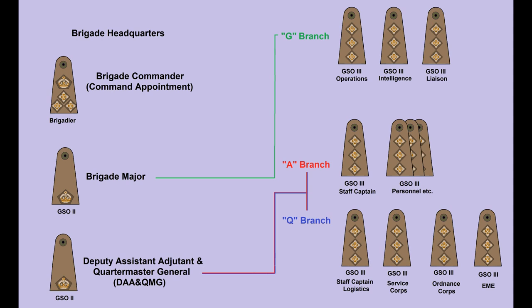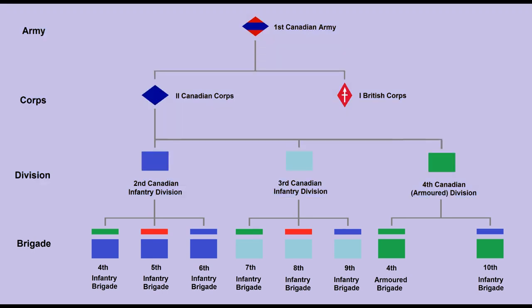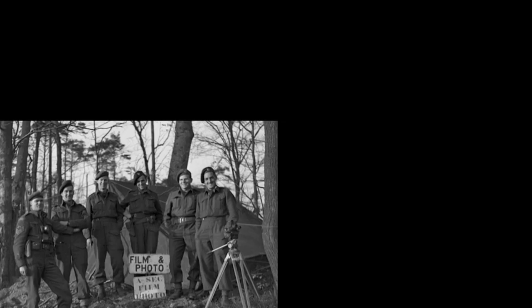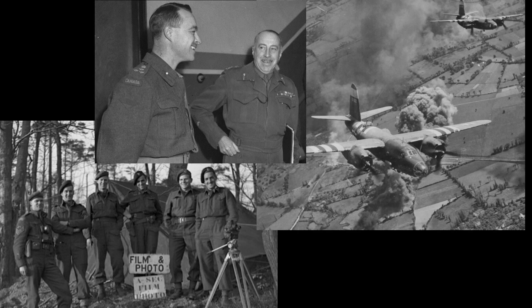He had a Junior Staff Officer to assist, and three other GSO-3 represented the Service Corps, Ordnance Corps, and Electrical and Mechanical Engineers as advisors. There was no GSO-1 at the Brigade level, but at each higher level — Division, Corps, and Army — the Staff System broadened in scope to accommodate additional complexities, from public relations to air support, and included higher ranking General Staff Officers.